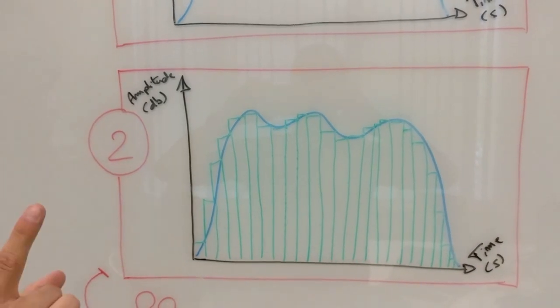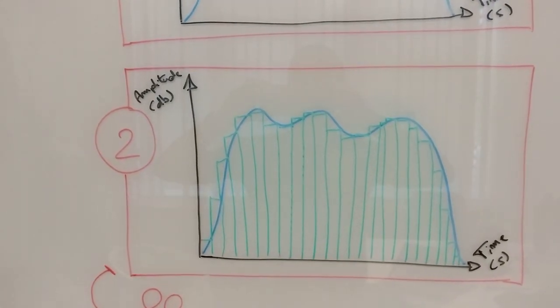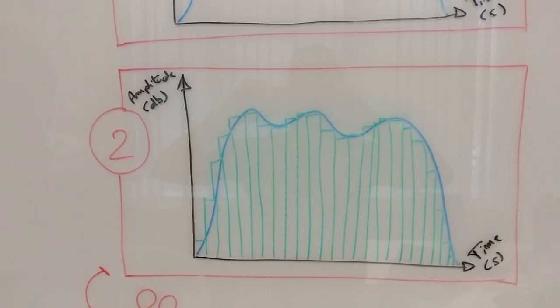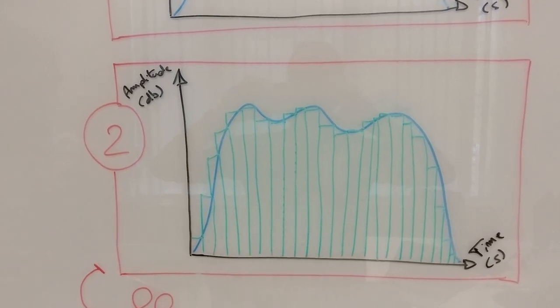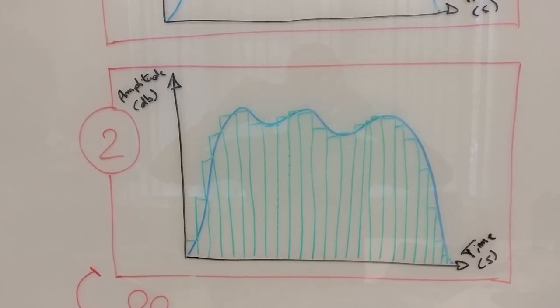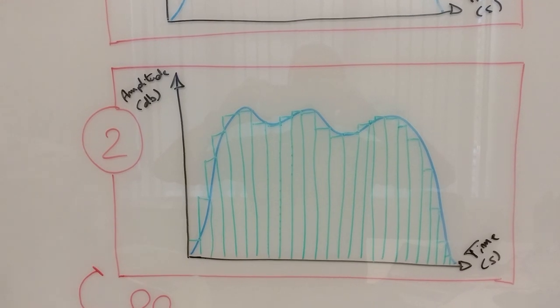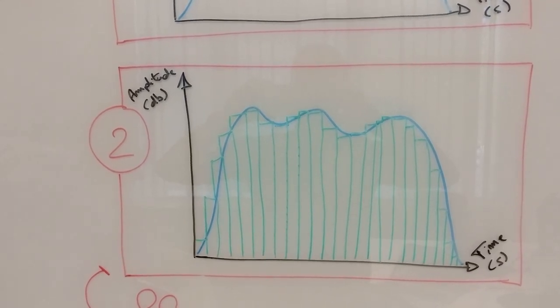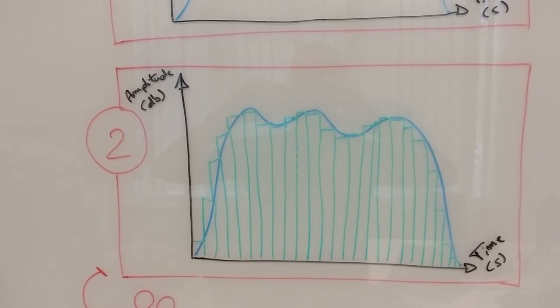So, two steps down, one more to go. Even if the data is digitized, we are still missing something. In the speech recognition process, we actually need three elements of sound: its frequency, its intensity, and the time it took to make it.